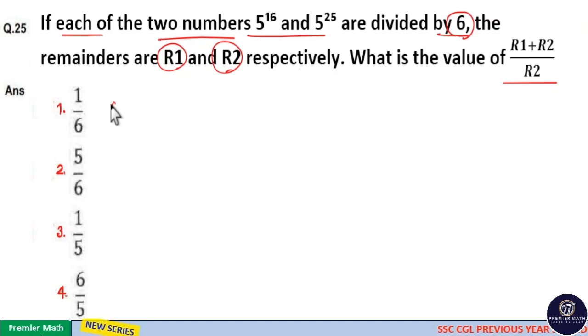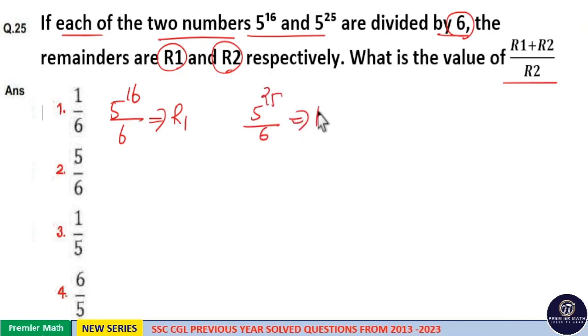Here 5 raised to 16 by 6 will give you remainder R1 and 5 raised to 25 by 6 will give you remainder R2.